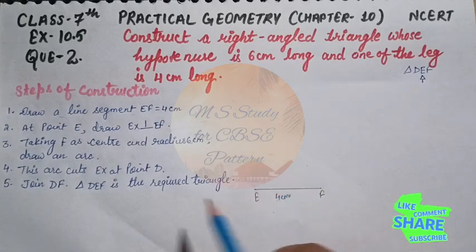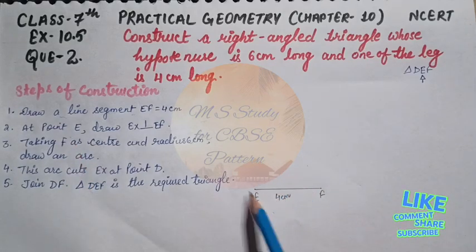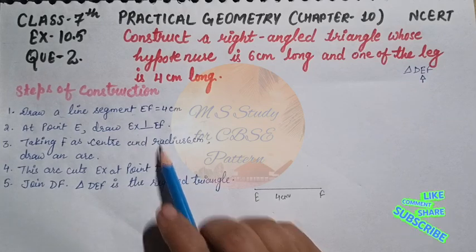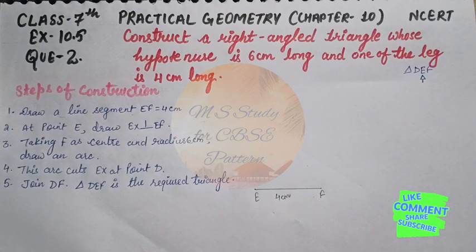The next step is at point E, draw EX perpendicular to EF. Draw a left angle, a 90-degree angle.